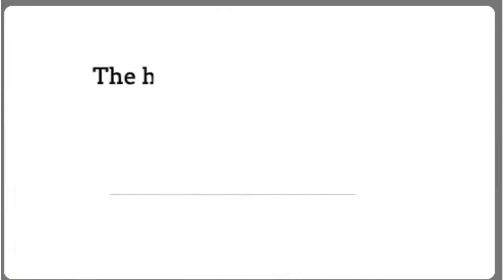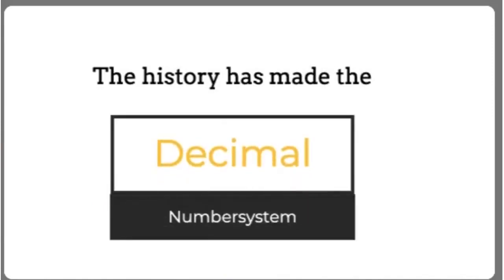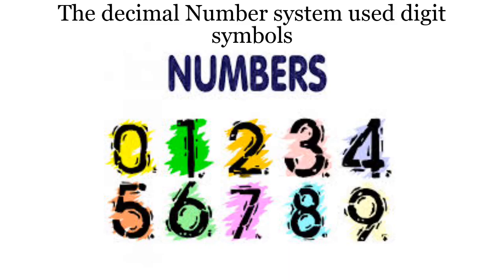Over the ages of development of number theory, the decimal number system turned out to be the most efficient one. The decimal number system uses digit symbols 0, 1, 2, dot dot dot up to 9 to represent 0 and the first 9 integers.